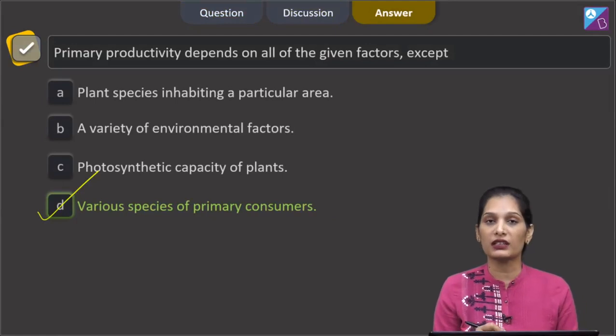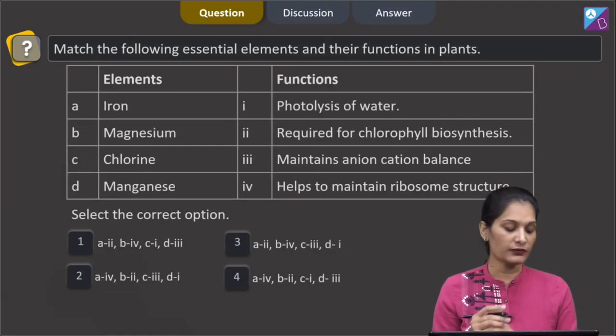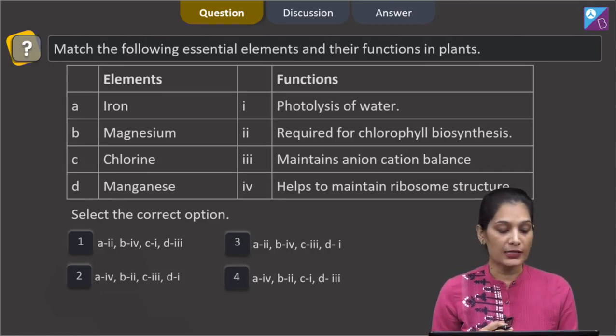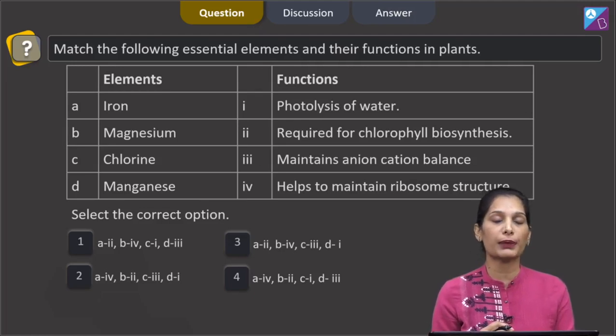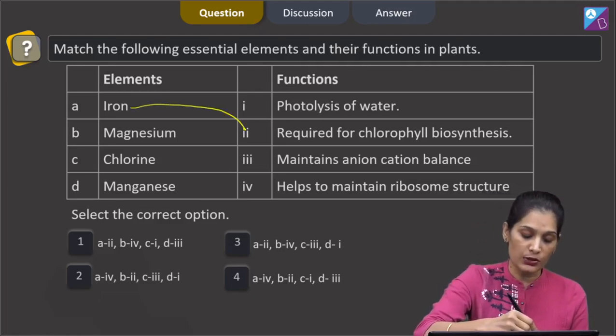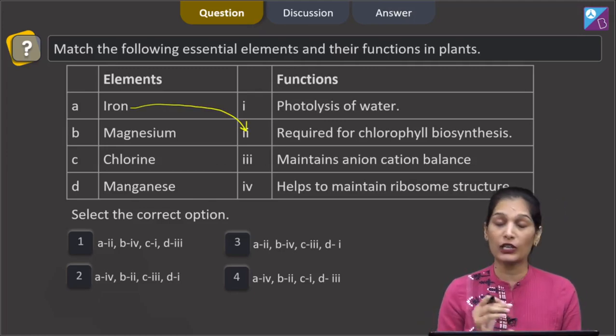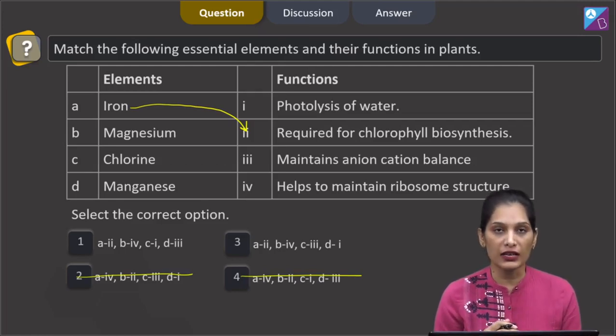Let's move to the next question. This question says: match the following essential elements and their functions in plants. Iron - iron is required for chlorophyll synthesis. Chlorophyll is the green pigment present in the plants. So a matches with second. In option number two and four, a is matching with fourth, so these two options are ruled out.